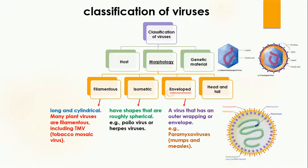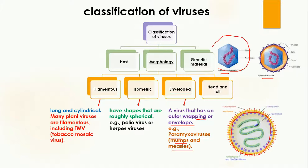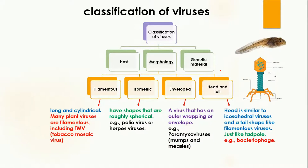The third type is enveloped virus. Enveloped means they have an outer wrapping or envelope, meaning their DNA or RNA is protected by an additional layer called the envelope. The example includes paramyxovirus, which causes mumps and measles. In this diagram you can see the genetic material and the outer envelope. Viruses without this envelope are called naked viruses.